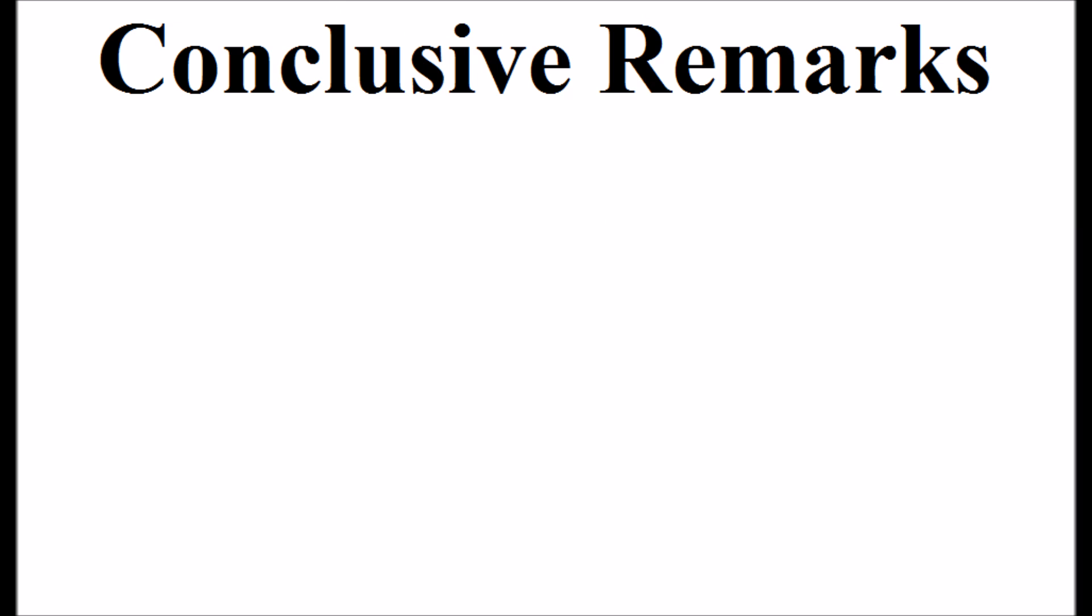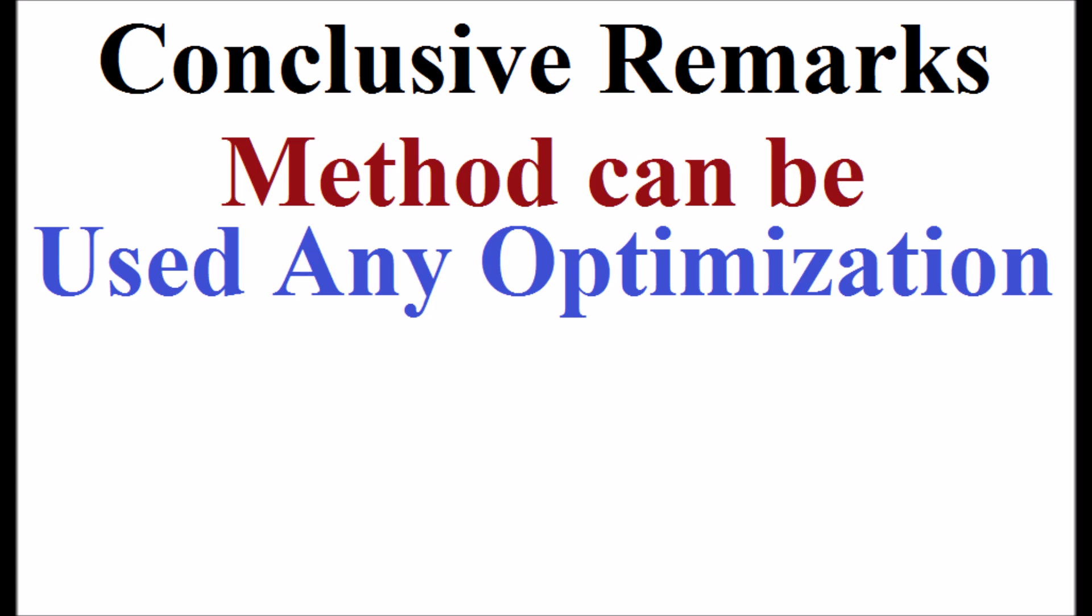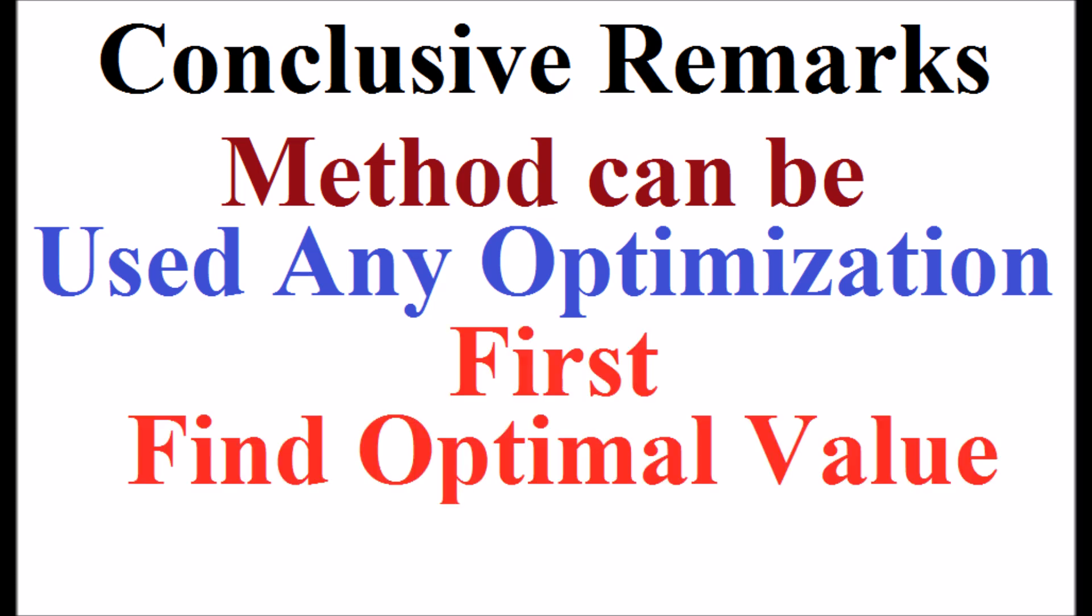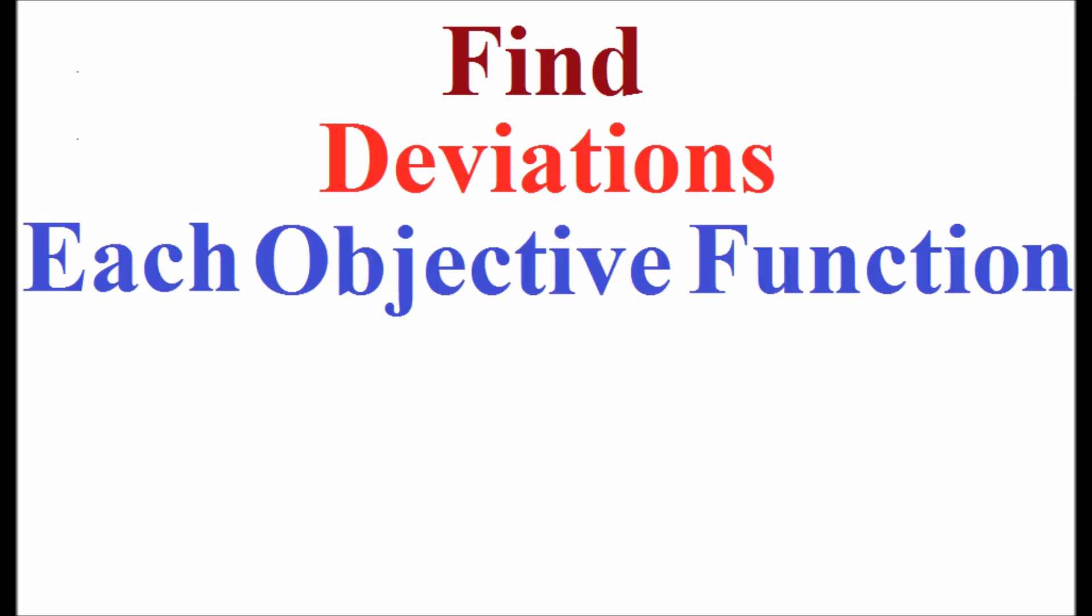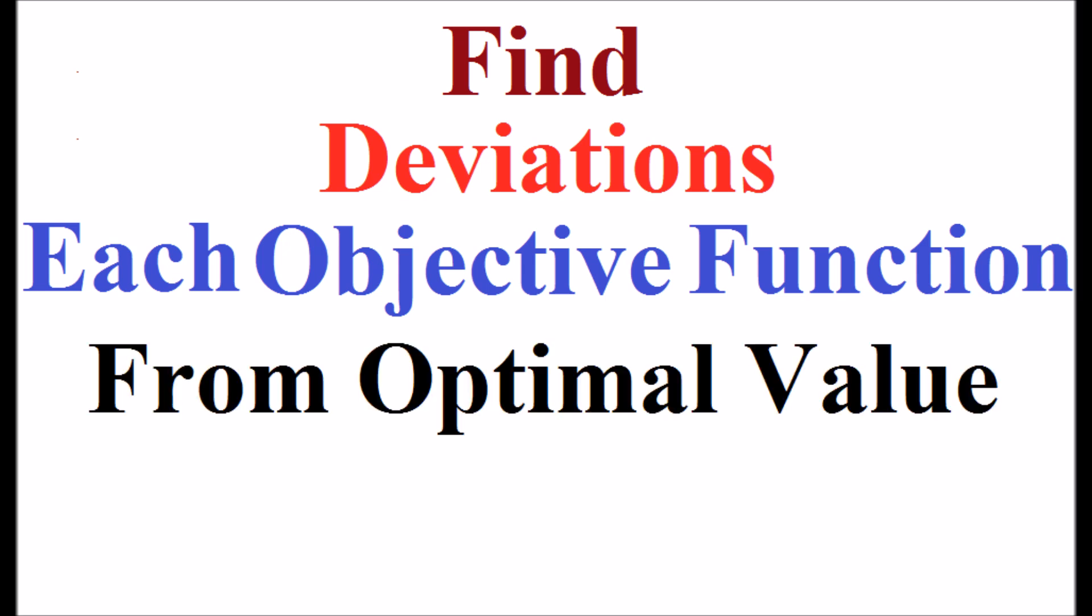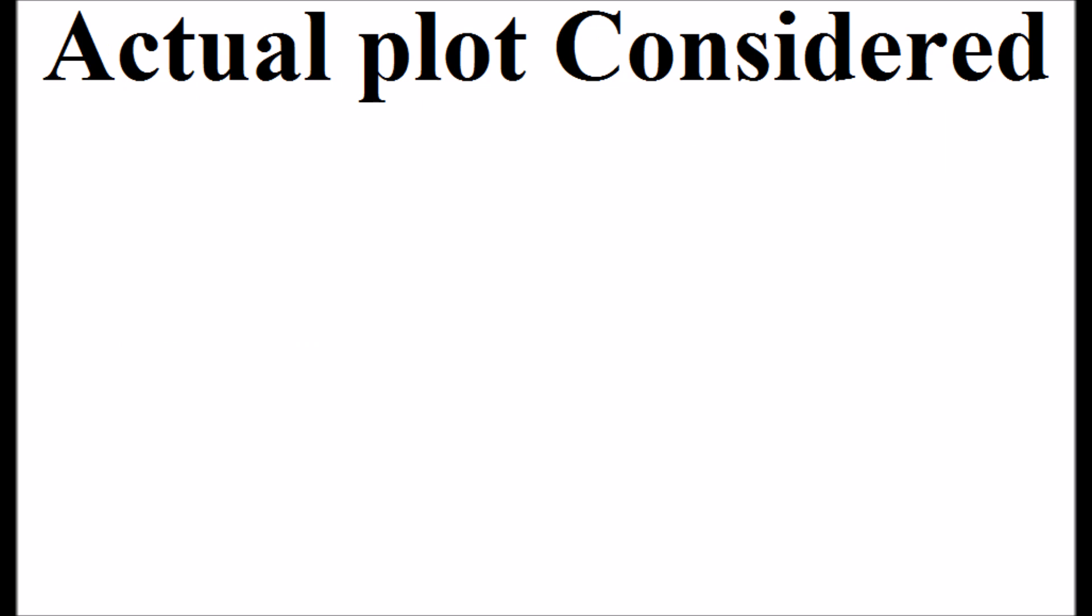As a conclusive remark, this method can be used for any optimization problem. First, find the optimal value of single objective functions and then find the deviations of each objective function from the optimal value as a percentage. By adding all these deviations and minimizing with single optimization method is the best solution.